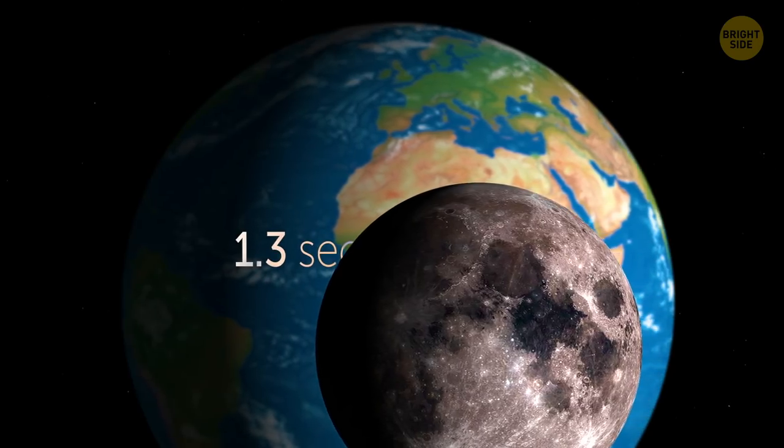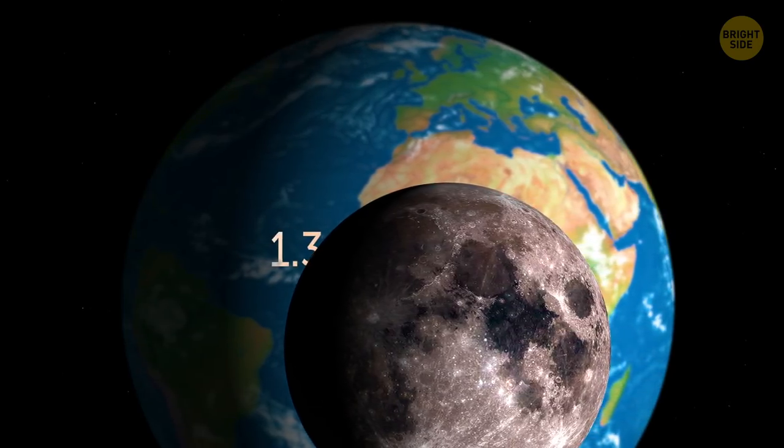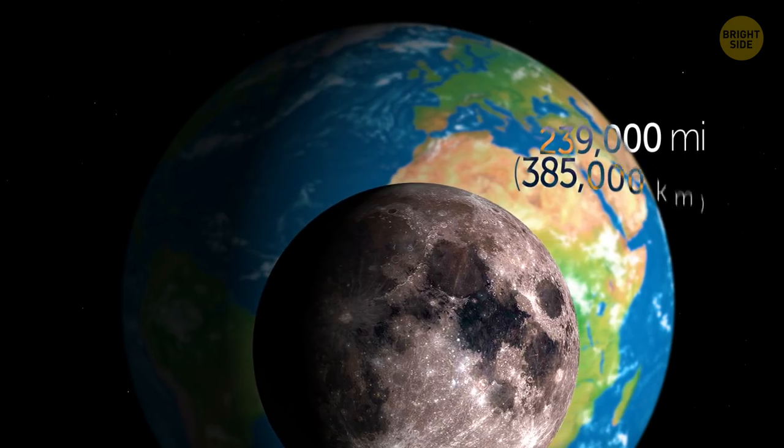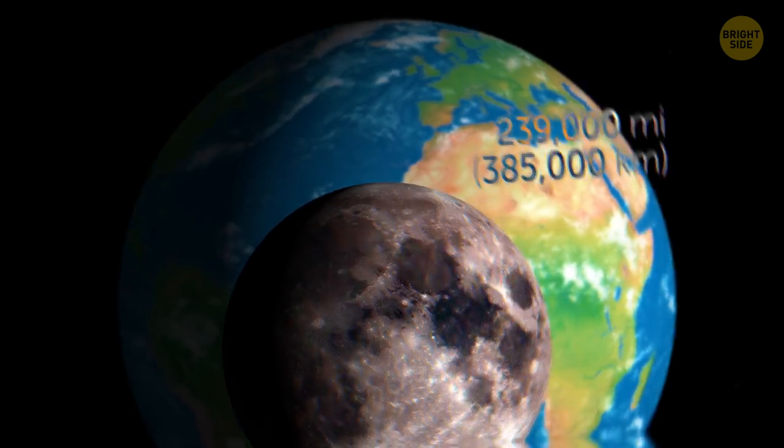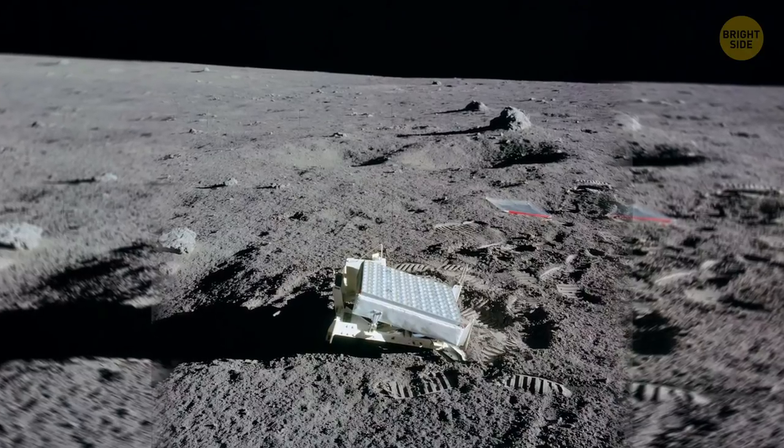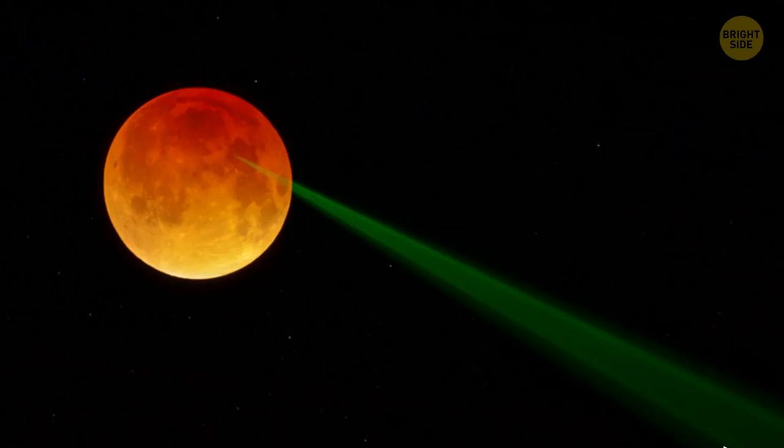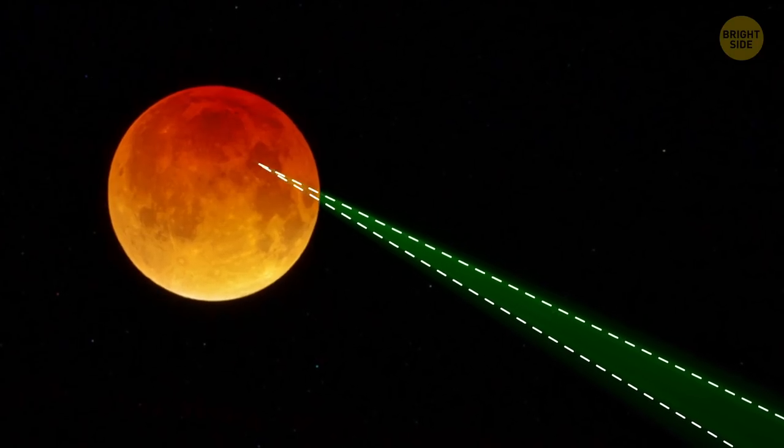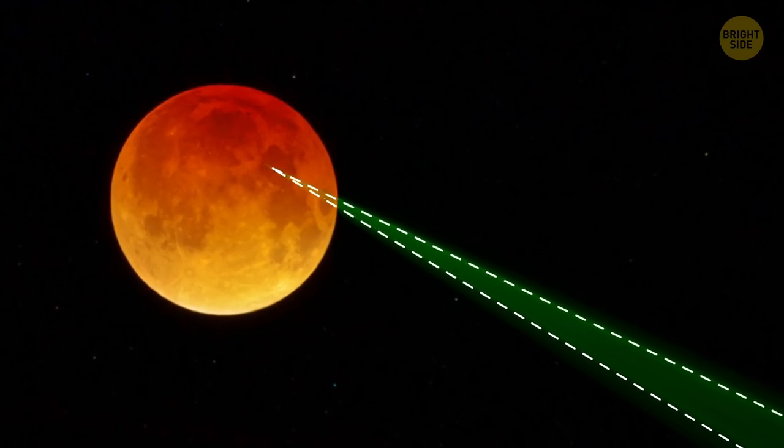It takes 1.3 seconds for the Moon light to reach the Earth, and it travels a distance of 239,000 miles. There are 5 retroreflectors on the Moon's surface that mirror the light back to the source. So if you shoot at the Moon with powerful lasers, the light will come back in 1.3 seconds.